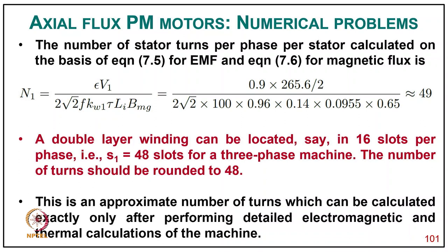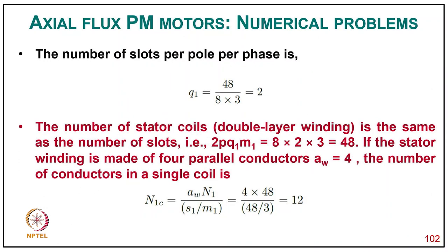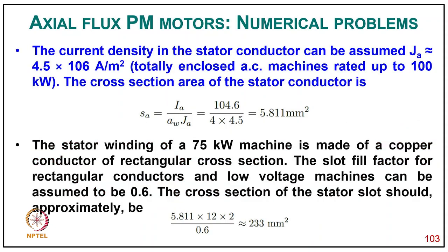This is an approximate number of turns that can be calculated exactly only after detailed electromagnetic and thermal calculations. The number of slots per pole per phase q1 = 48/(8×3) = 2. The number of stator coils for double-layer winding equals the number of slots S1 = 48. If the stator winding is made with parallel conductors aw = 4, the number of conductors in a single coil is N1c = aw·N1/S1 = 12. The current density for a totally enclosed AC machine rated 200 kW is assumed j = 4.5×10⁶ A/m². The cross-section area of the stator conductor is S = Ia/(aw·j) = 5.811 mm².